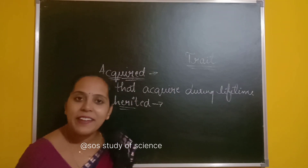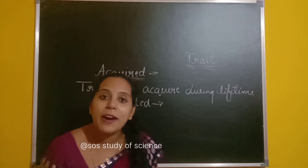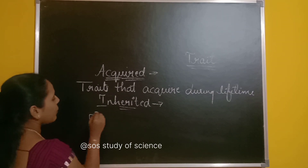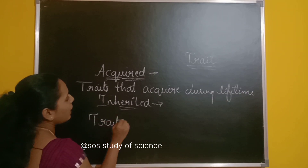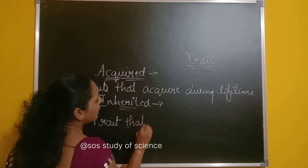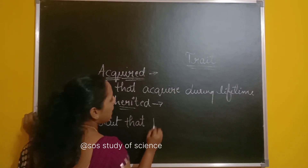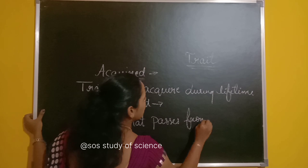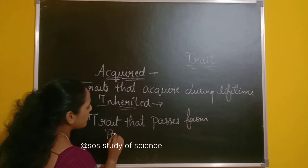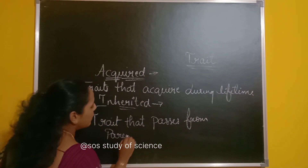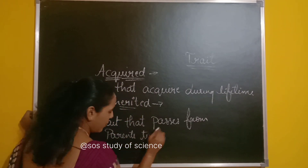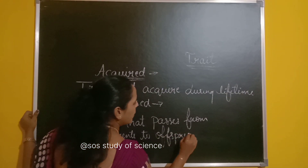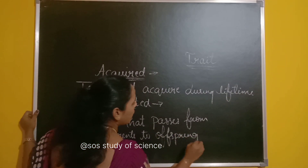So how can we define inherited trait? Traits that pass from parents to the next generation, or offspring, are called inherited traits. Offspring is nothing but the next generation. This is how you differentiate between acquired trait and inherited trait.